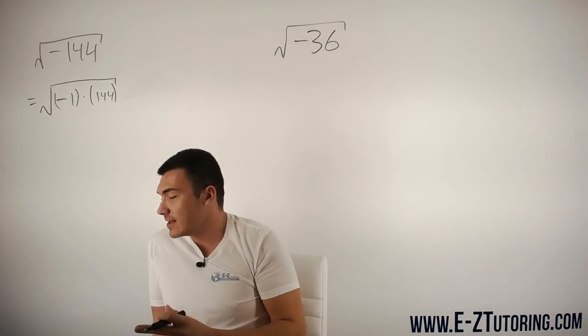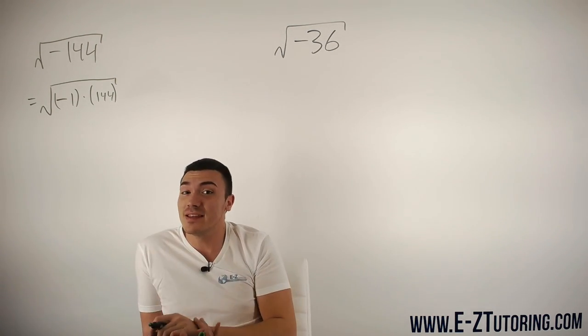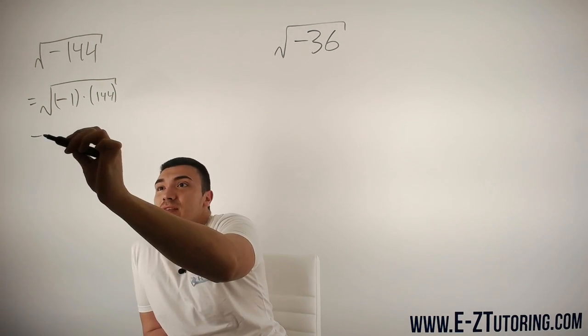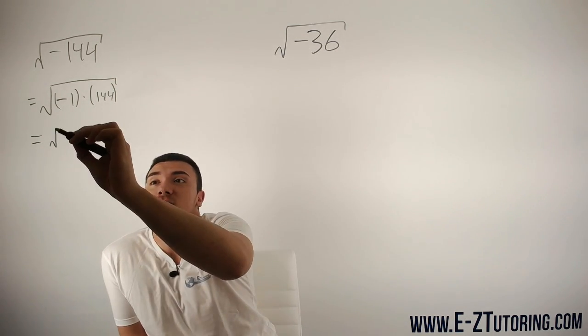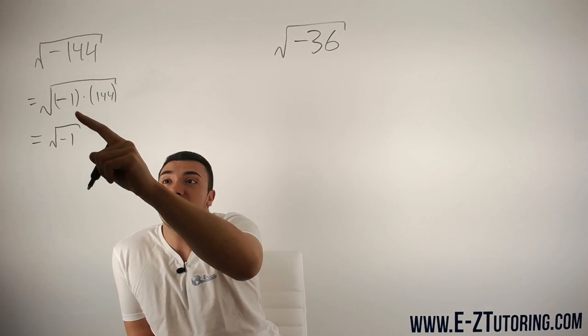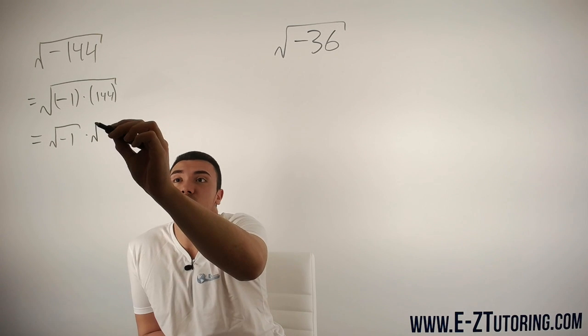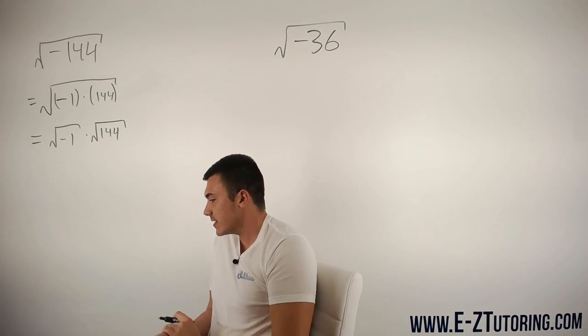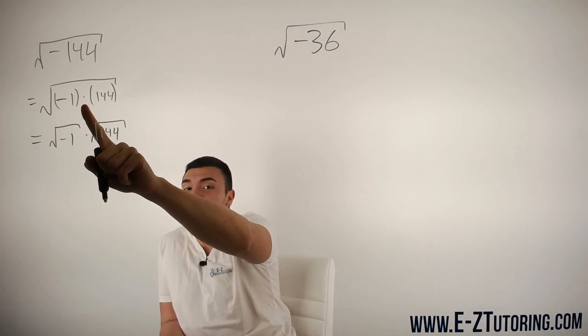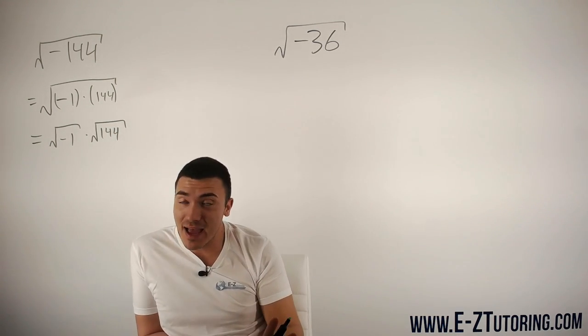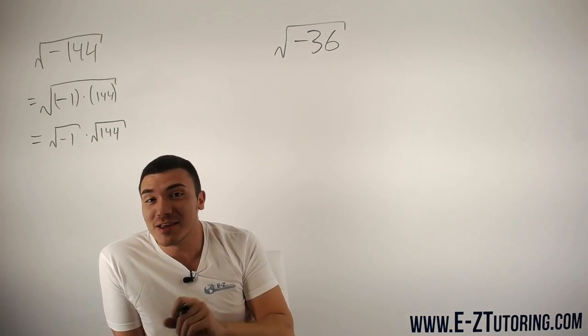There's a reason I do this - we can take the square root of each of these individually. Using the rules of square roots, I can split this up into the square root of negative one times the square root of 144. You're allowed to do this only for multiplication or division, never for addition or subtraction.